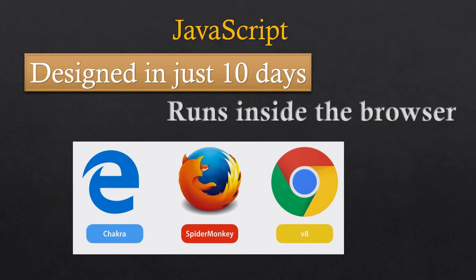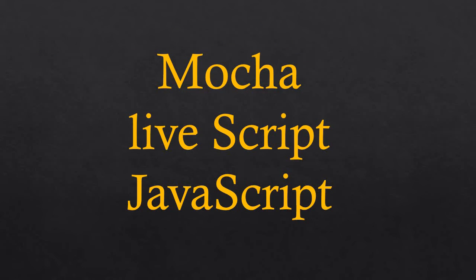JavaScript was designed in just 10 days. Initially it was designed to run and execute in a browser. In that first week, Brendan Eich designed both the JavaScript programming language and the JavaScript engine.